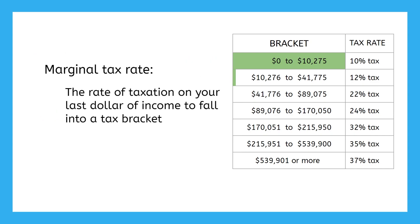Earning that one extra dollar and jumping into the next tax bracket did not massively increase the amount of tax you owed — it actually only added $0.12 onto your liability. So despite your taxable income placing you in the 12% tax bracket, your tax burden, or the percentage of your income that you pay in taxes, is still just above 10%. This is what marginal tax rates are meant to represent: the rate of taxation on your last dollar of income, not your total tax burden. Being in the 12% tax bracket doesn't mean you paid 12% tax on all of your income, just on the last portion.